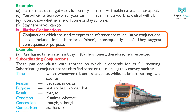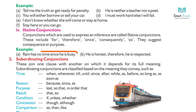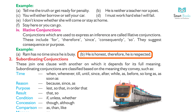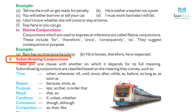4. Illative conjunctions — conjunctions which are used to express our inference are called illative conjunctions. These include: for, therefore, since, consequently, so. They suggest consequence or purpose. Example: (a) Ram has no time since he is busy. (b) He is honest therefore he is respected.